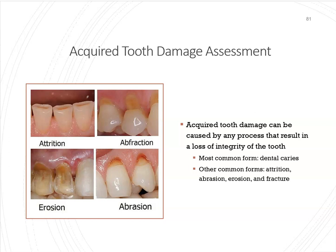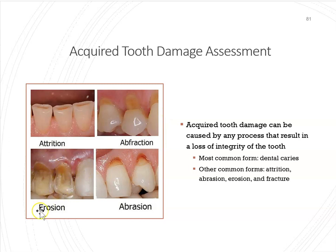When we do hard tissue charting, we're not only looking for caries but also tooth damage. If they're grinding, you can get attrition. If they're grinding and clenching a lot over time, you can get abfraction. If they have an acidic diet or acid reflux, it could cause erosion. And abrasion is if they're brushing really, really hard.